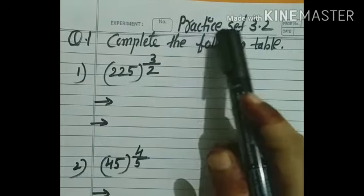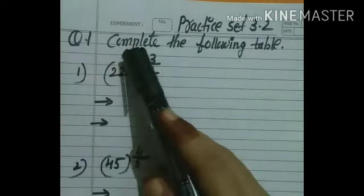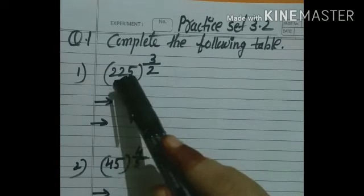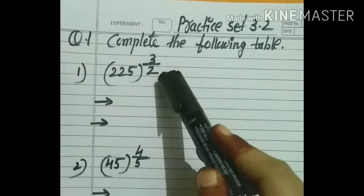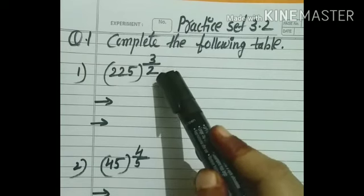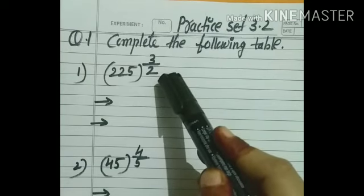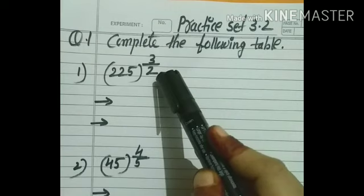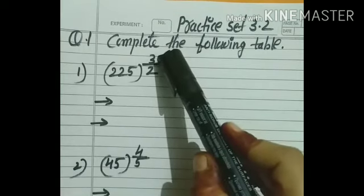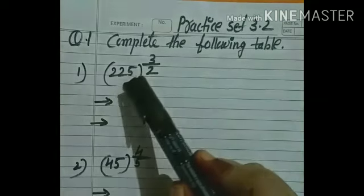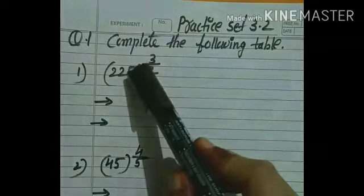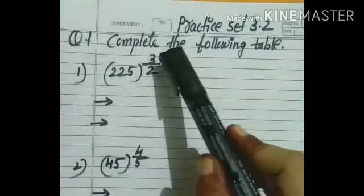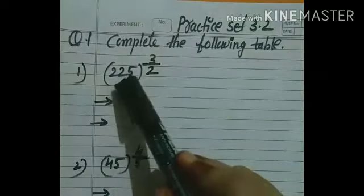We are going to solve Practice Set 3.2, Question Number 1: Complete the following table. The first question given is 225 raised to 3 upon 2. Here the index is in rational form. Whenever the index is in rational form, there are two meanings. The first meaning: 3 is the power and 2 is the root of this number. So the first meaning is: the cube of the square root of 225.